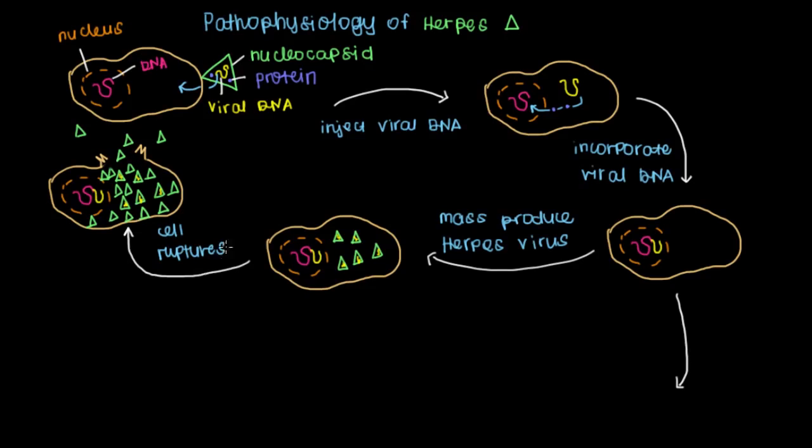And because the cell popped open here or ruptured, another term for rupture is lysis. The name of this phase for the herpes life cycle is the lytic phase. And that's in contrast with what's happening here.